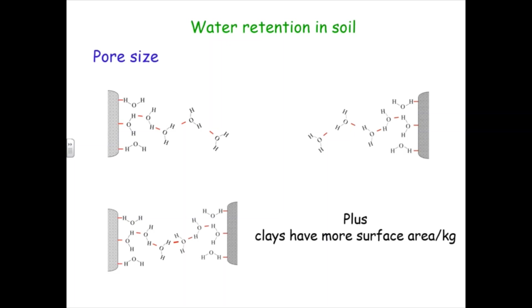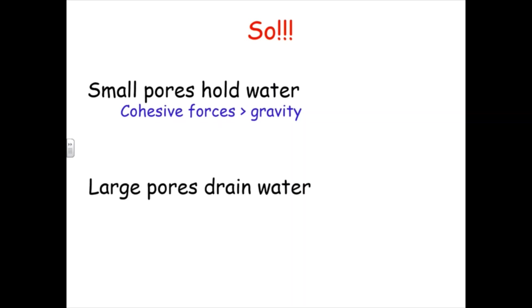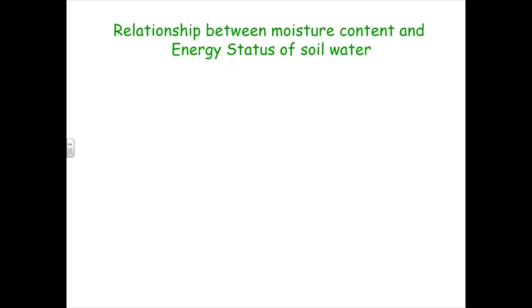To add on to that, small pores, think of a clay, small particles, so therefore small pores between them. A clay actually has a lot more surface area per kilogram of soil. So you have more opportunity for water to be held by adhesion. So small pores will hold water because the cohesive forces are stronger than gravity. And large pores will drain water because gravity is stronger than the cohesive forces. The pores that we talk about have to be stable though, and a lot of today's talk will be about pores that aren't stable.